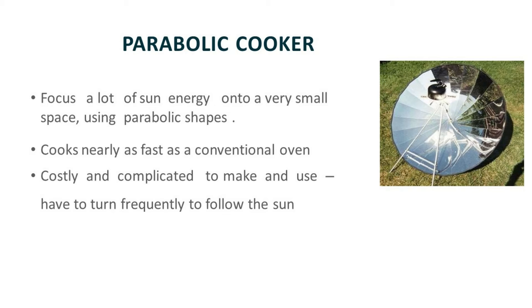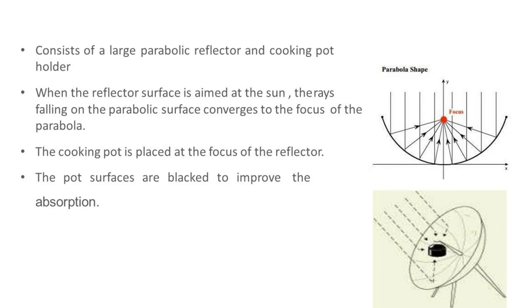The parabolic cooker focuses a lot of sun energy into a very small space using a parabolic shape. It cooks nearly as fast as a conventional oven, but it is costly and complicated to make and use — we have to turn it frequently to follow the sun. When the reflector surface is aimed at the sun, the rays falling on the parabolic surface converge to the focus of the parabola. The cooking pot is placed at the focus of the reflector, and the pot surfaces are blacked to improve absorption.